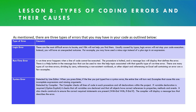There are only three types of errors that you may have in your Visual Basic for Applications code. The first type is known as a logic error. These are the most difficult errors to locate, and Visual Basic will not help you find them. They're usually caused by typos and will not stop your code execution. Instead, you will have an unexpected outcome — for example, using a minus sign instead of a plus sign in an expression, so it calculates but gives an unexpected result.